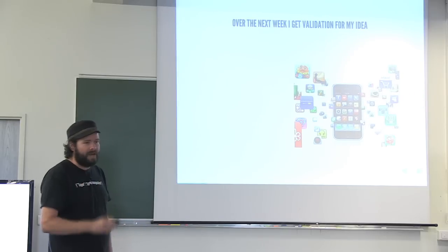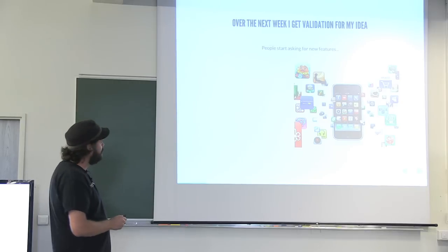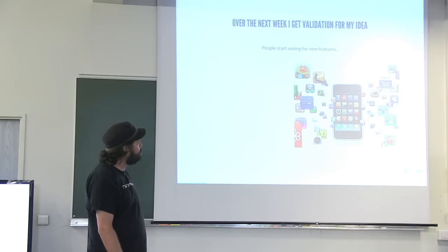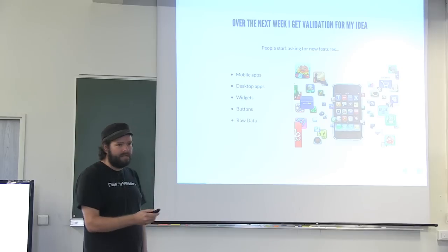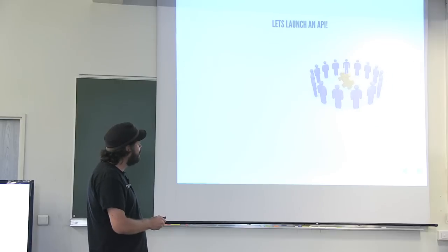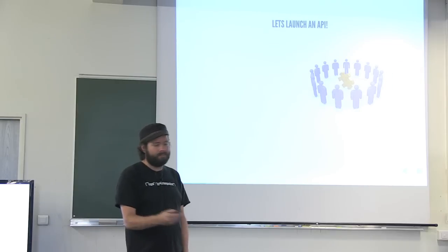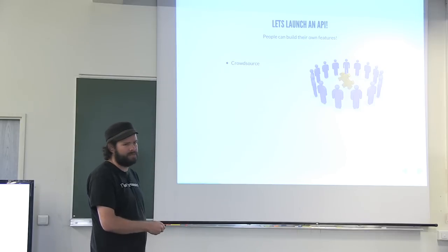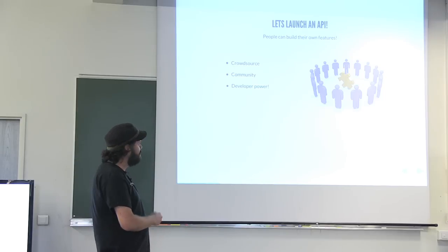I'm getting a lot of validation for my idea. People seem interested. But they're asking for new features. They want mobile apps, desktop apps, widgets, buttons, raw data. They want access to the data behind the scenes. So I'm going to launch an API. People can build their own features. I'm going to crowd source my company. I'm going to focus on what I do best and let the community deliver everything else.